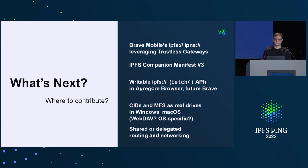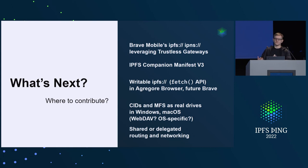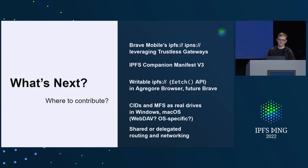Next is the IPFS Companion rewrite. We have to rewrite it due to Manifest V3 requirements, but it's a good opportunity: if we have the service worker which is part of Manifest V3, maybe we can also leverage trustless retrieval inside Companion. That means even if you don't have Desktop, don't have Brave, and prefer a different browser, you may still be able to have trustless retrieval in just the extension.